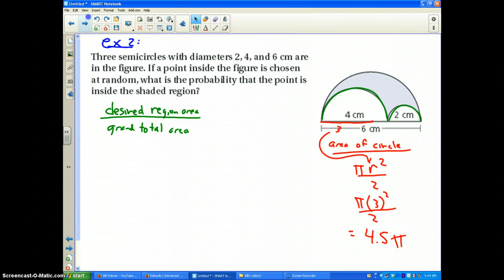Now, people, one thing you need to understand, your college entrance exams will not multiply by pi. Just leave it. Leave it just like that. So my grand total area is 4.5 pi.